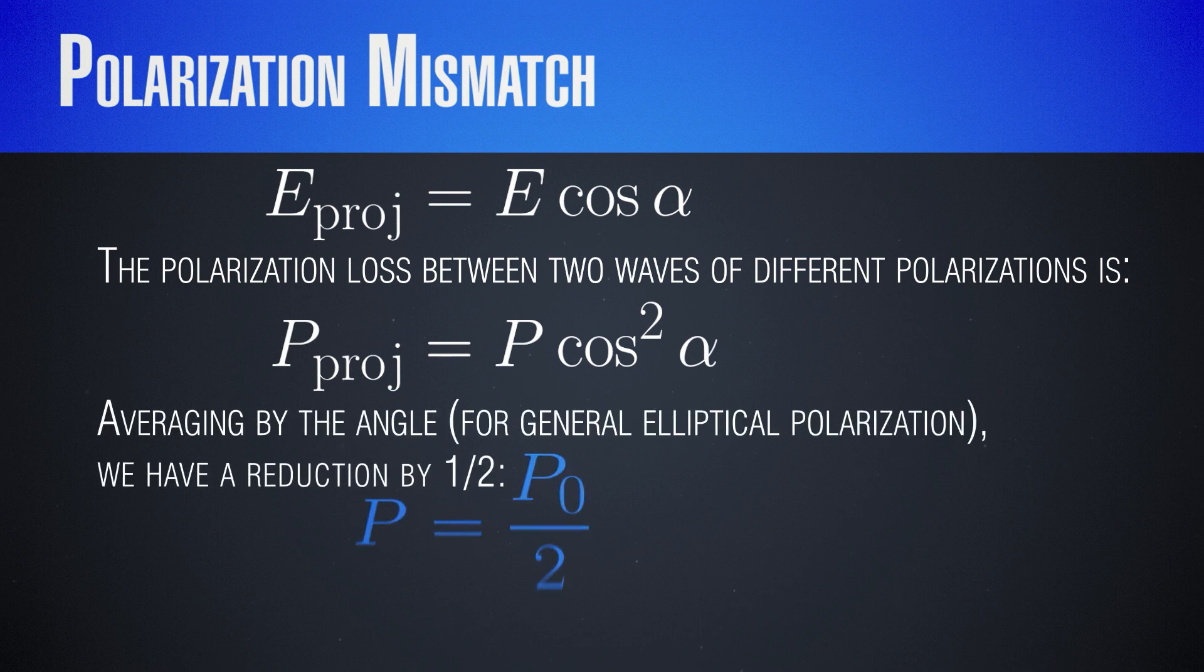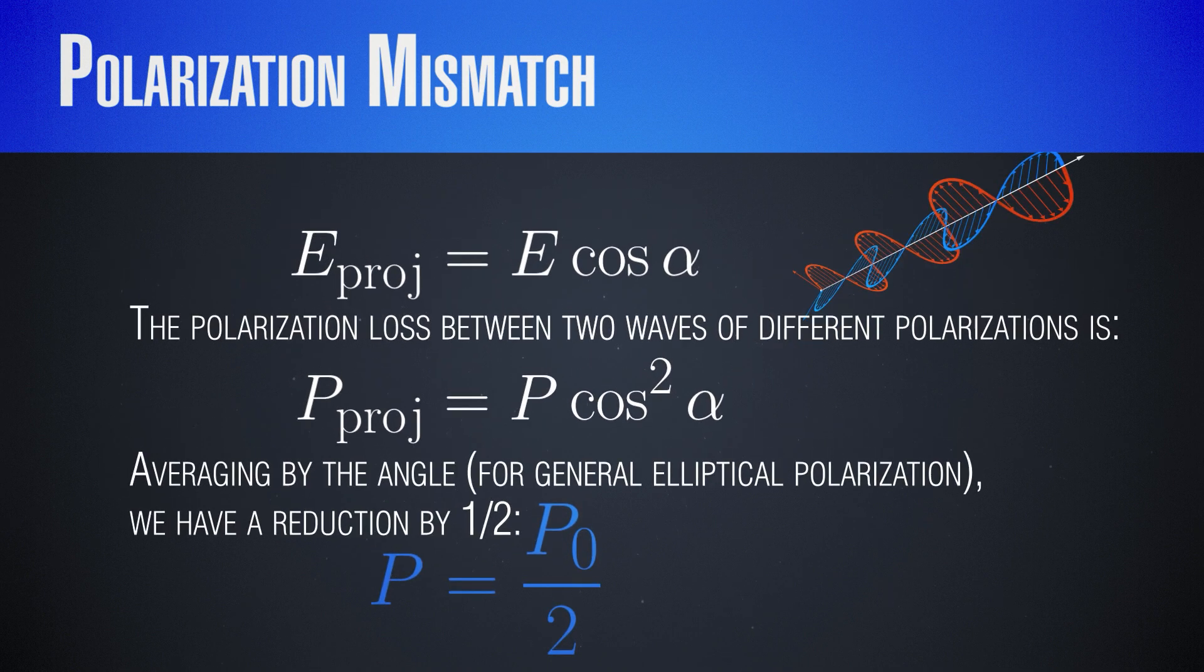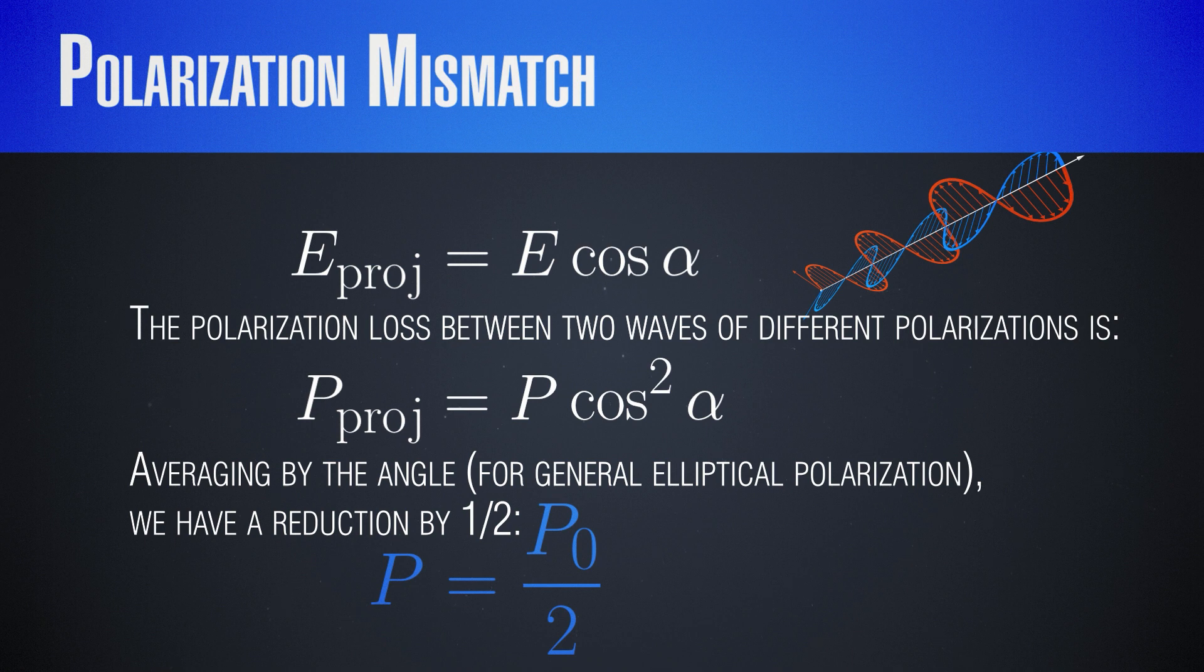Now, considering a wave of random polarization, an elliptical one for example, the average value of the cosine squared given by an integral over its period is simply half of it. So the maximum loss due to polarization mismatch is two times reduction, which corresponds to minus 3 dBs.